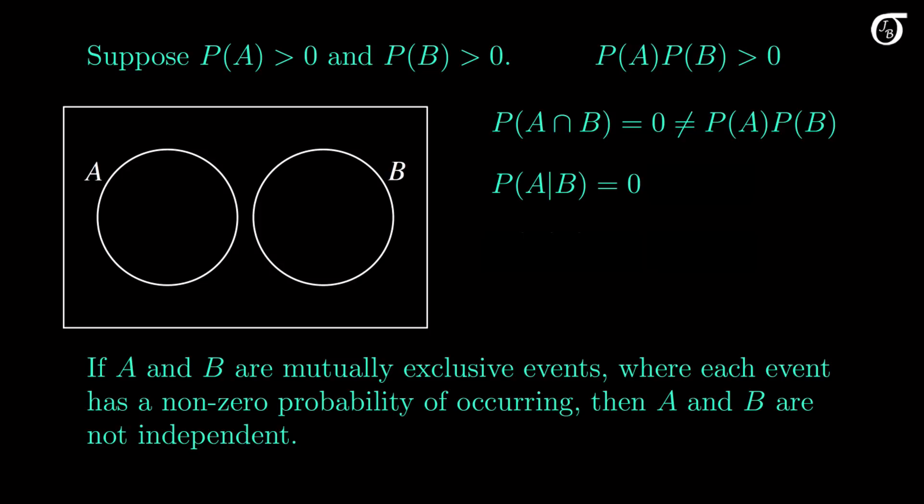The original probability of A is greater than 0 here, so the conditional probability of A given B is not equal to the probability of A, and thus A and B are not independent. The knowledge that B has occurred has changed the probability of A, from whatever it was originally, to 0. A and B are very much dependent.